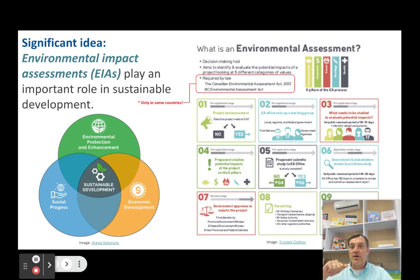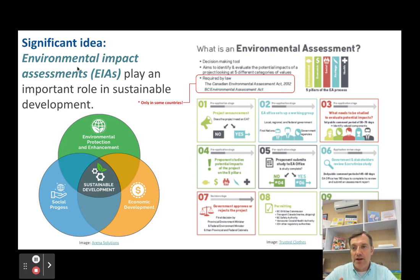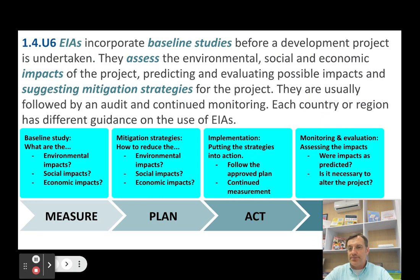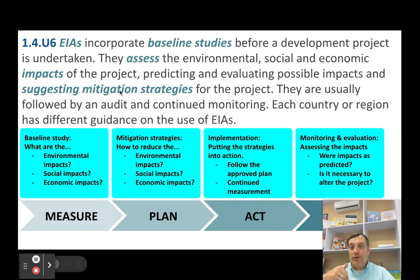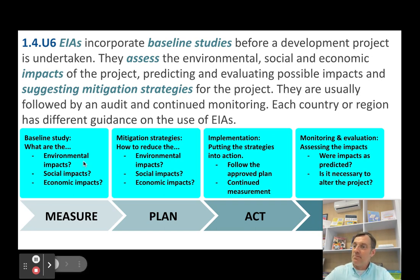The next big idea in topic 1.4 is that environmental impact assessments are important for sustainable development. An assessment means to measure — we want to measure the environmental impact of our actions. That's what an EIA does. EIAs are going to differ depending on the size of the project and which country it takes place in, but they all follow a fairly similar structure. First, you do a baseline study to figure out the current state of the environment before the project begins, looking at environmental, social, and economic impacts.